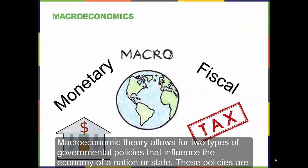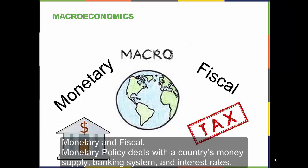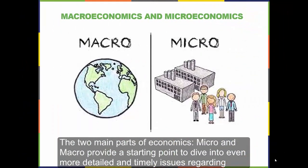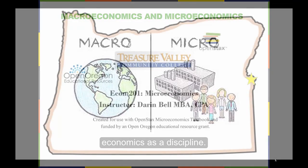Macroeconomic theory allows for two types of governmental policies that influence the economy of a nation or state. These policies are monetary and fiscal. Monetary policy deals with a country's money supply, banking system, and interest rates. The two main parts of economics, micro and macro, provide a starting point to dive into even more detailed and timely issues regarding economics as a discipline.